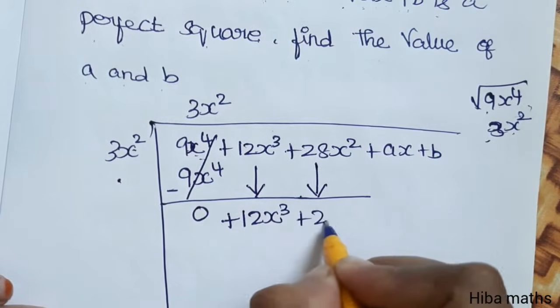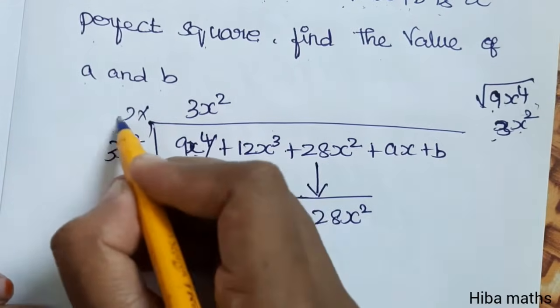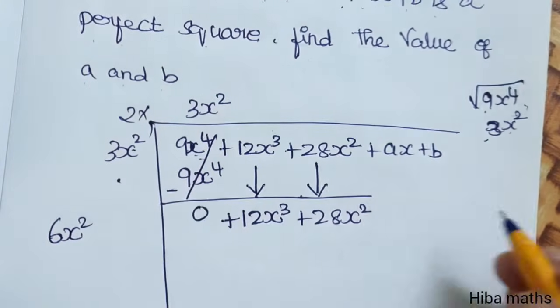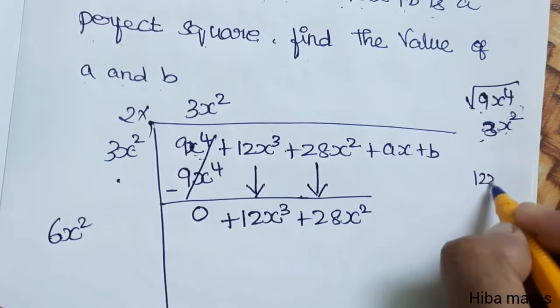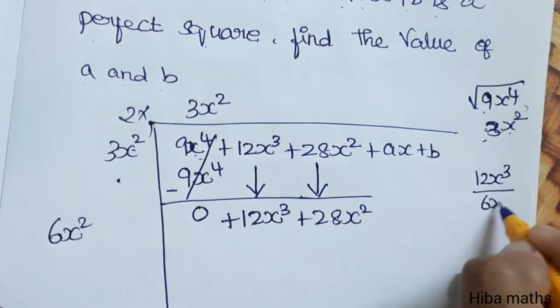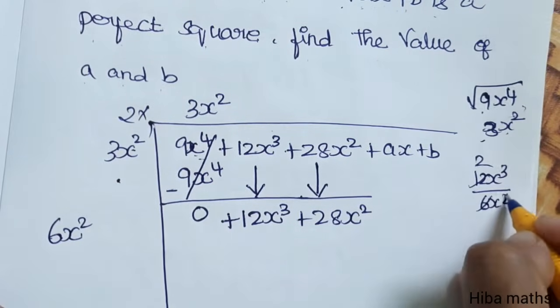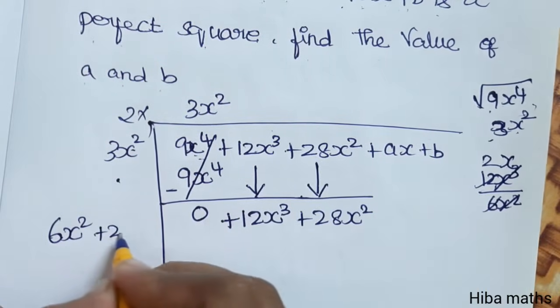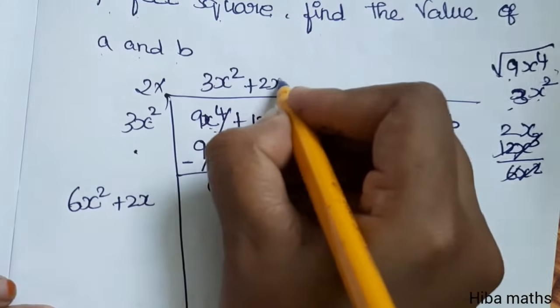12x³ plus 28x². Now the divisor is 2 times 3x², which is 6x². Now divide the first term: 12x³ divided by 6x². x² and x³ cancel, so plus 2x. What do we do? Plus 2x.